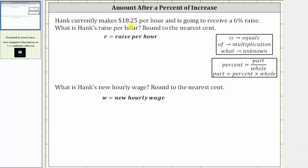Hank currently makes $18.25 per hour and is going to receive a 6% raise. What is Hank's raise per hour? Round to the nearest cent.